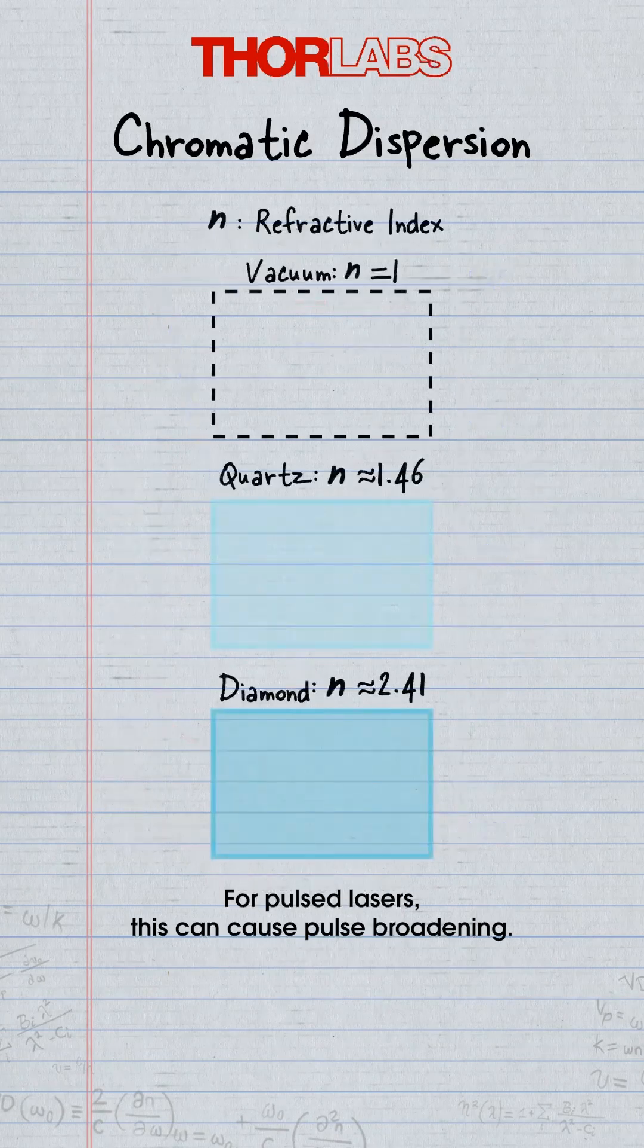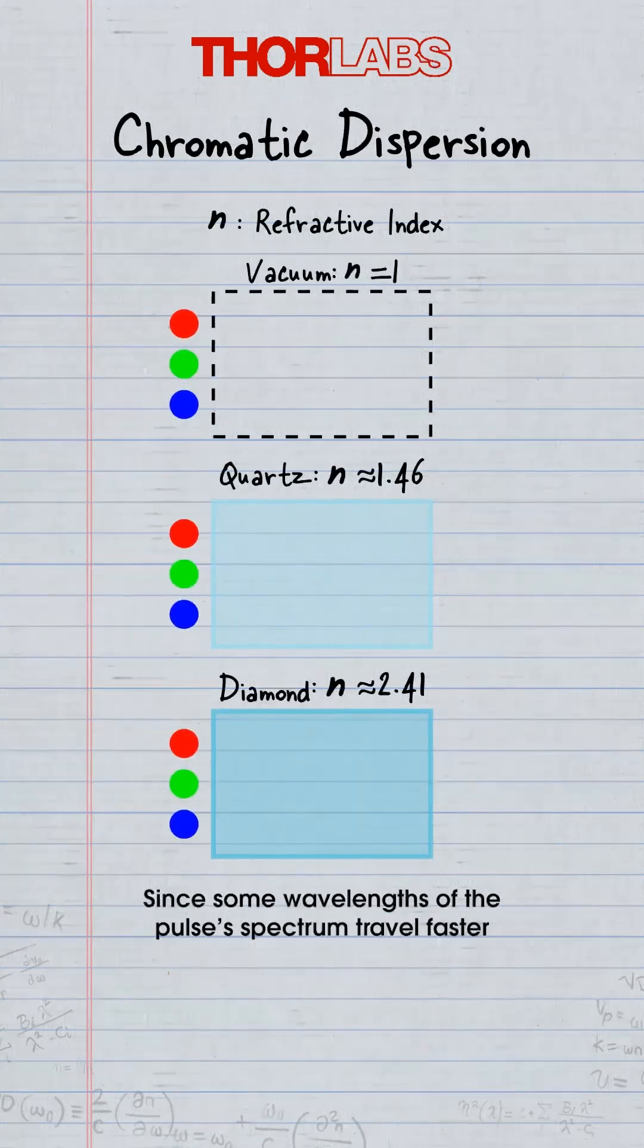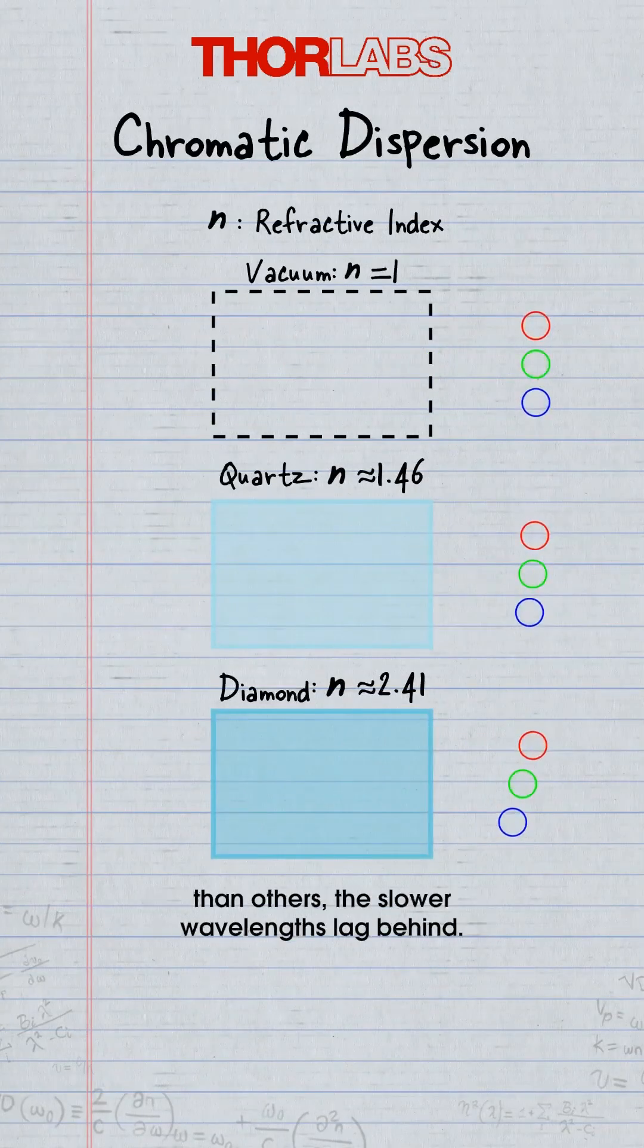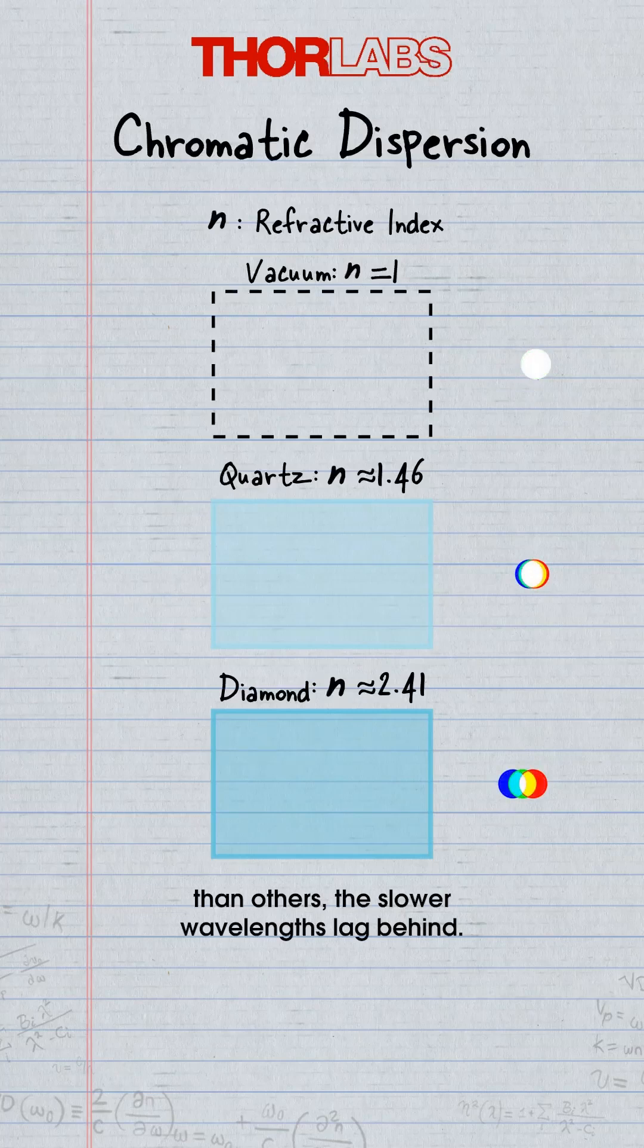For pulse lasers, this can cause pulse broadening. Since some wavelengths of the pulses' spectrum travel faster than others, the slower wavelengths lag behind.